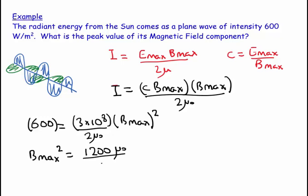Which is 12 times 10 to the 2 over 3 times 10 to the 8, times mu naught, which equals 4 times 10 to the minus 6 mu naught.